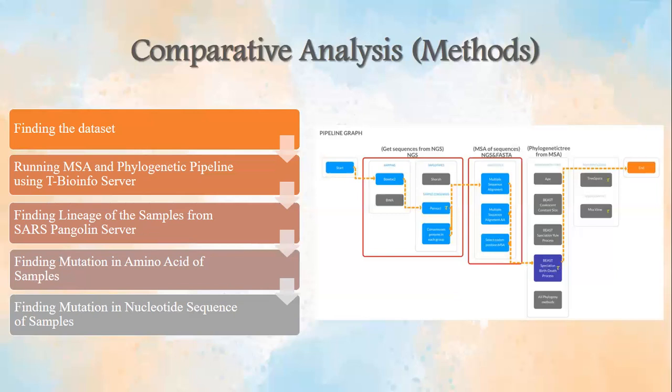The third step is finding the lineage of the samples from the SARS Pangolin server. We go to pangolin.cog-lineage.org, upload the FASTA sequence for each sample, and click run to get the closest lineage for each sample. The next step is finding the amino acid mutations of the samples by searching for the specific lineage on the outbreak.info site. After that, we can find mutations in the nucleotide sequence of the samples using the MSA table obtained as a result of the MSA pipeline.